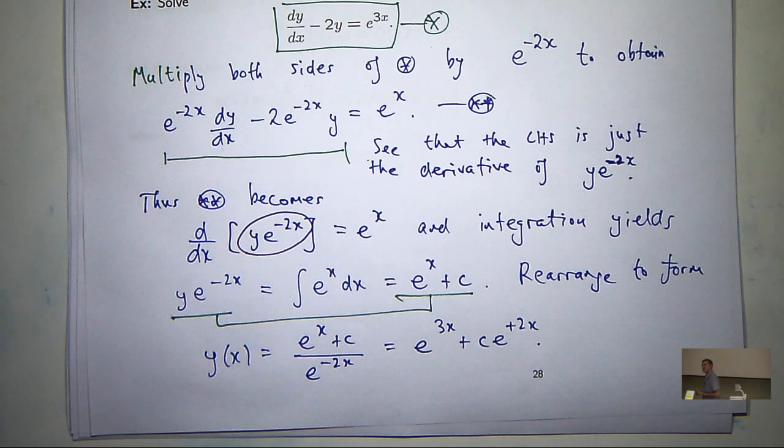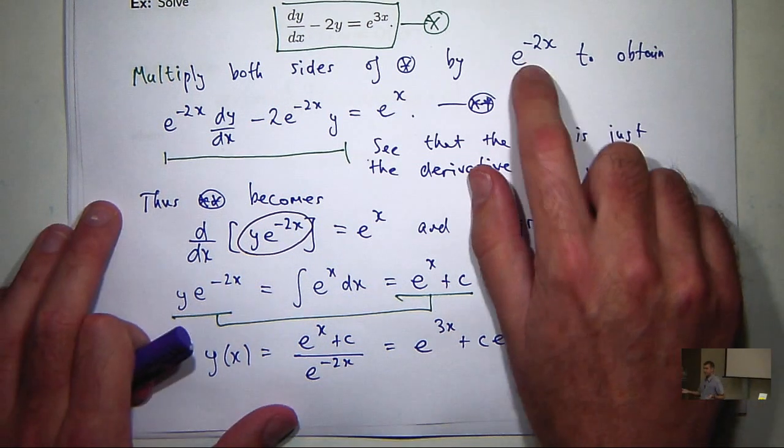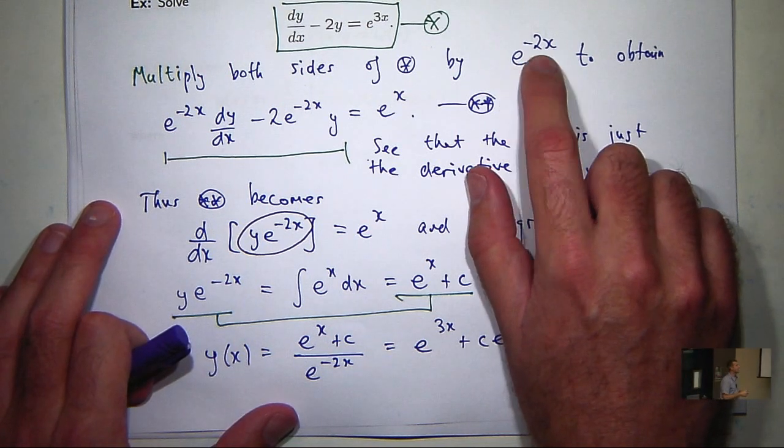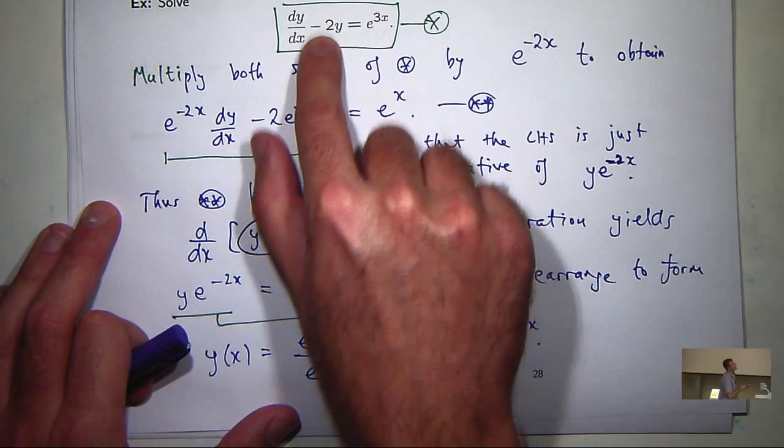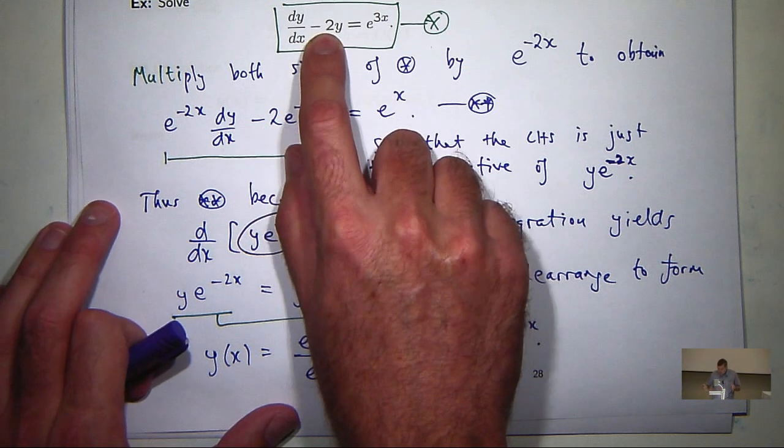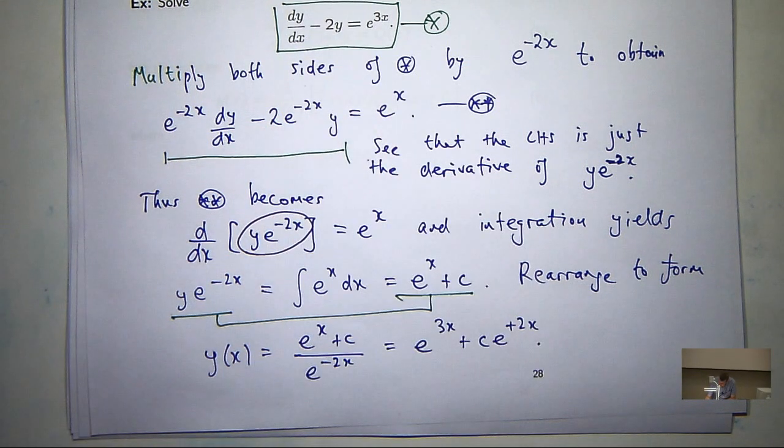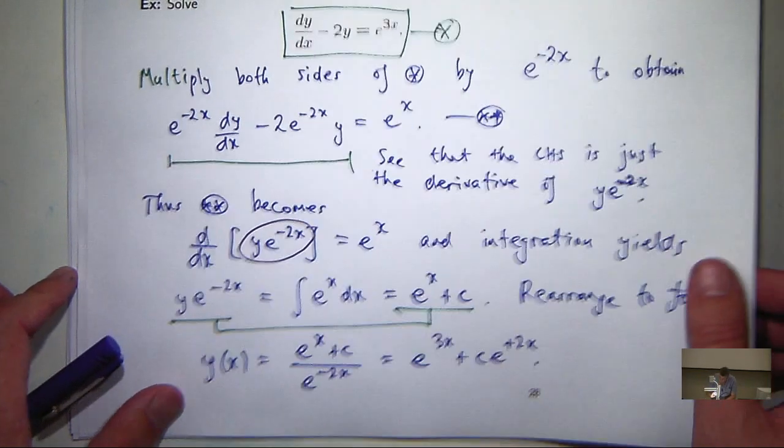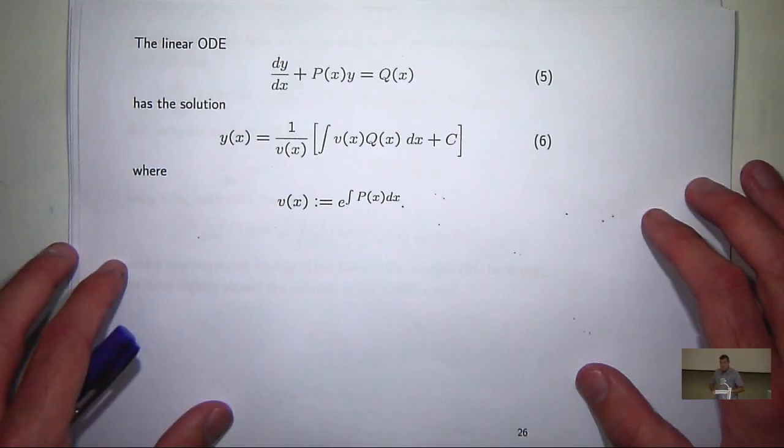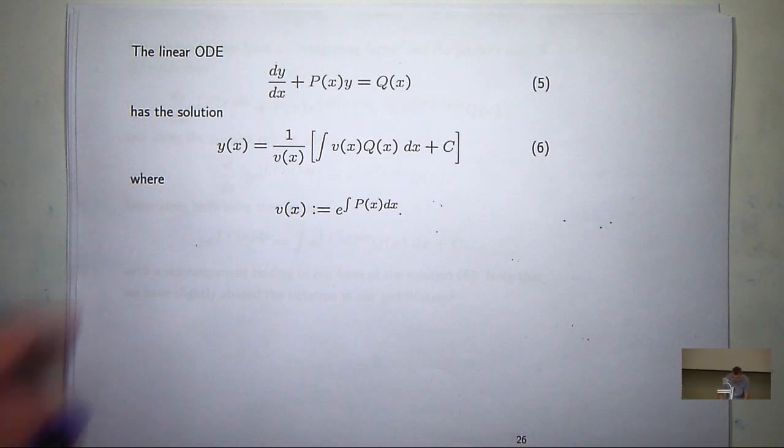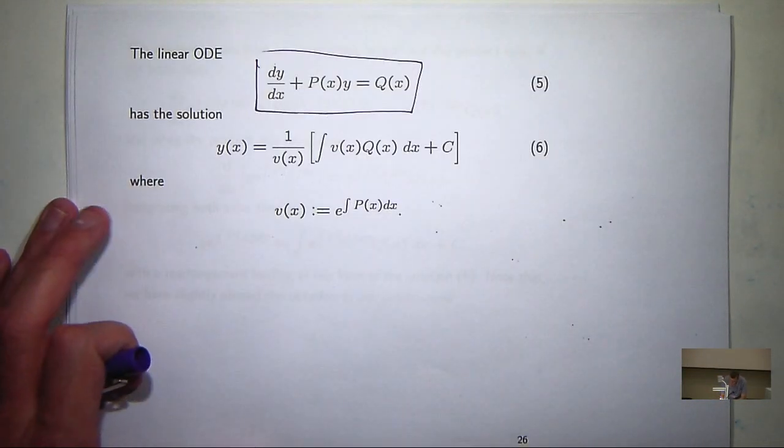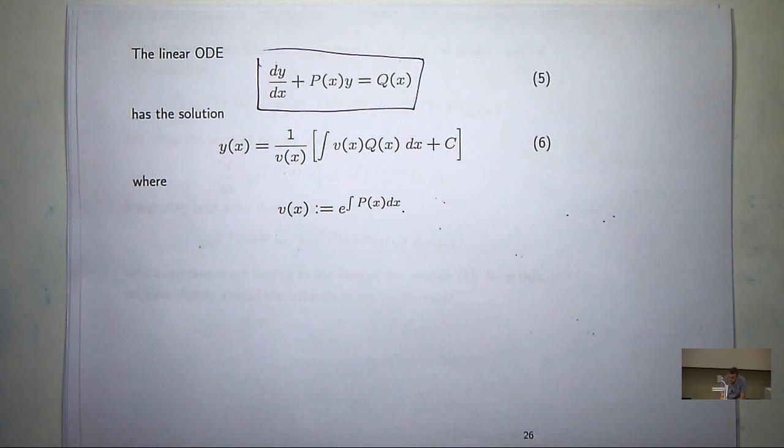So those two things will work in general when you just make this first choice e to the integral of this coefficient of y. In this case, e to the integral of minus 2, e to the minus 2x. So in a general framework, your linear differential equation has the following solution.